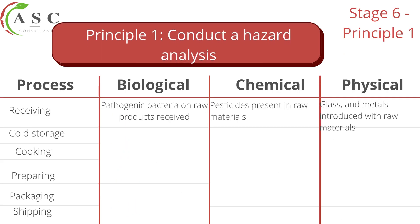Now let's look at principle one, which is conducting a hazard analysis. Basically, what is expected of you is to ensure that you list all the process steps where your product goes in your facility, and then identify what hazards could potentially occur, be introduced, grow, or survive in those particular process steps.